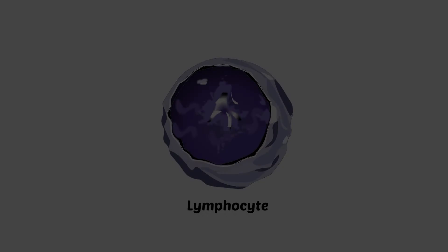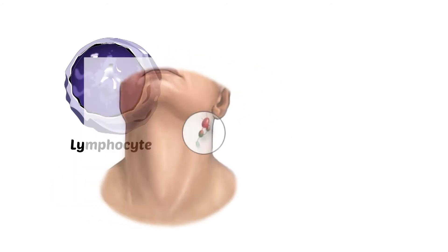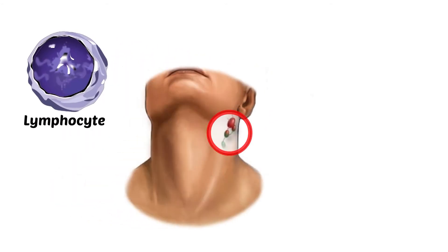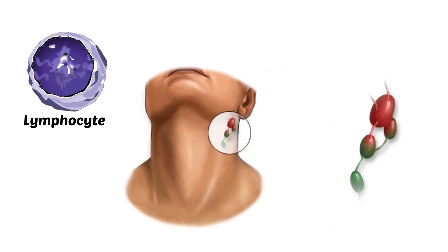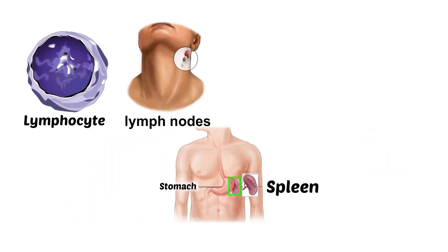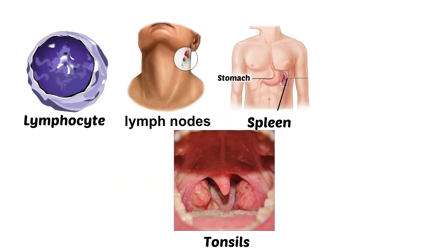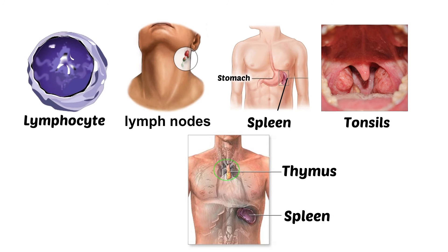What are lymphocytes? These are the smallest leukocytes. They are more common in lymphatic tissues, namely the lymph nodes, spleen, tonsils, and thymus.